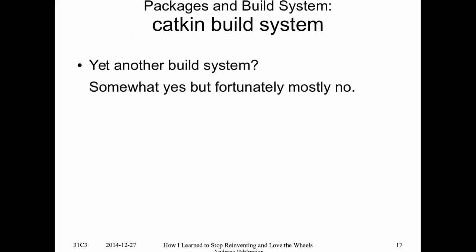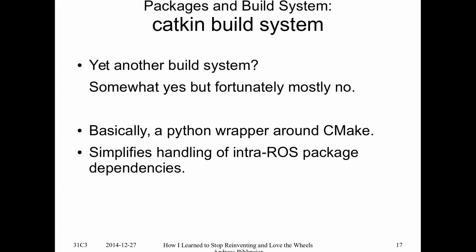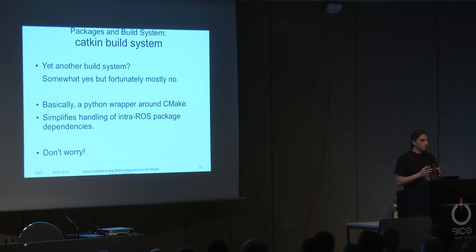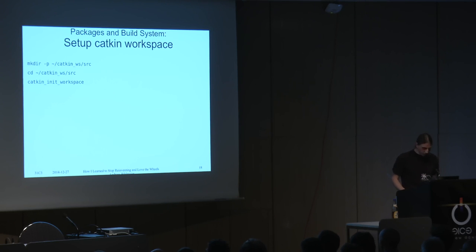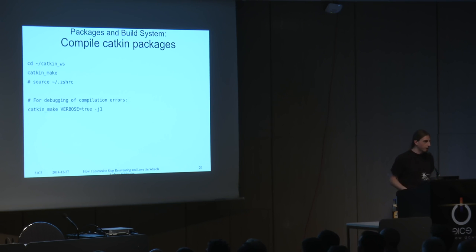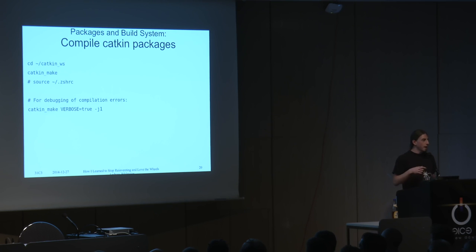ROS has its own build system, but the good thing is it's only a very thin wrapper around CMake. If you have ever worked with CMake, you will be fine. Otherwise, learn CMake — but this is really no game changer. It takes care of resolving dependencies between ROS packages and building them in the right order. It is of course annoying, but I've never seen a build system that's not annoying — so no change here.